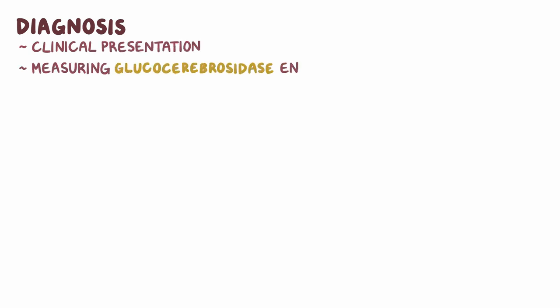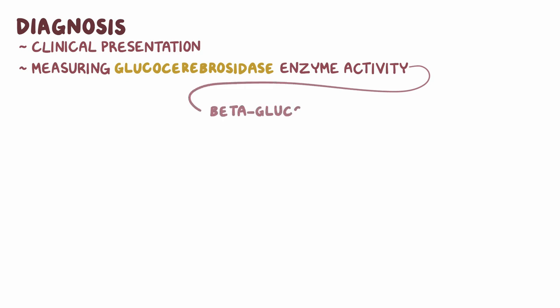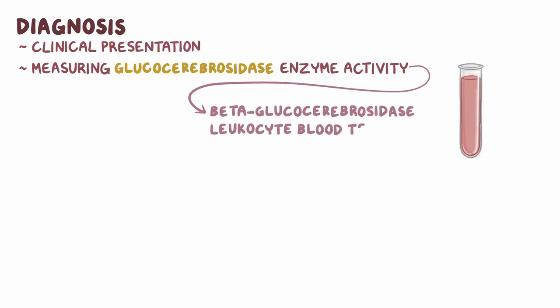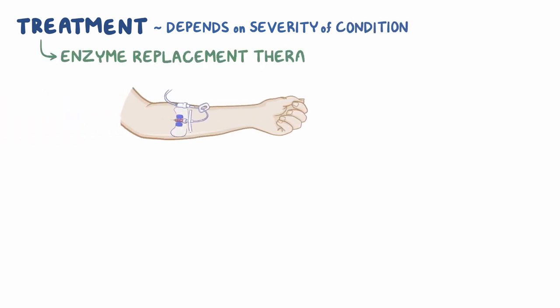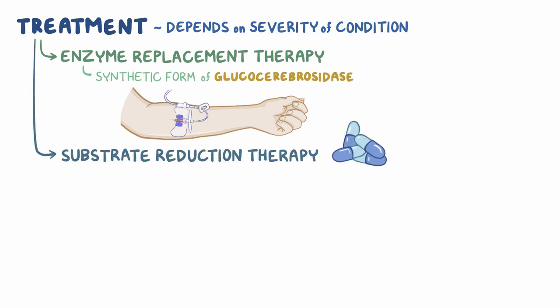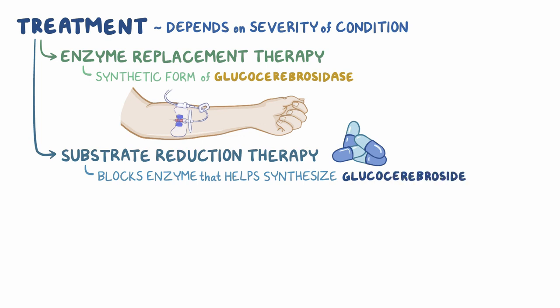Diagnosis of Gaucher disease relies on clinical presentation and measuring glucocerebrosidase enzyme activity with the beta-glucocerebrosidase leukocyte blood test. Genetic testing can be done to look for mutations in the GBA gene. Treatment depends on the severity of the condition, and can include enzyme replacement therapy with a synthetic form of glucocerebrosidase, as well as substrate reduction therapy designed to block the enzyme that helps synthesize glucocerebroside. Symptoms can be managed with supportive therapy.